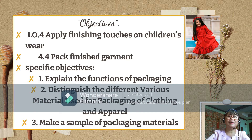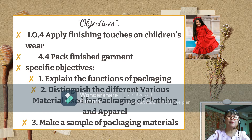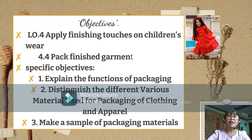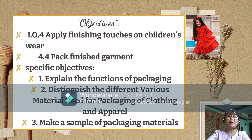We will be guided by the following objectives. Learning objective number 4: apply finishing touches on children's work. We have the general objective 4.4: pack finished garments. Our specific objectives are the following. Number 1, explain the functions of packaging. Number 2, distinguish the different various materials used for packaging of clothing and apparel. Number 3, make a sample of packaging materials.